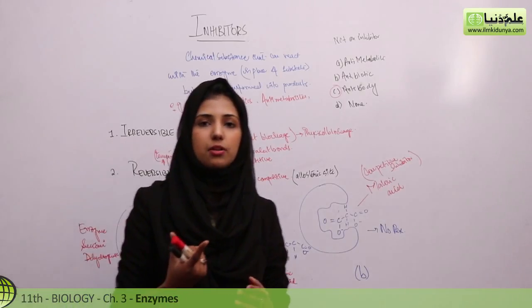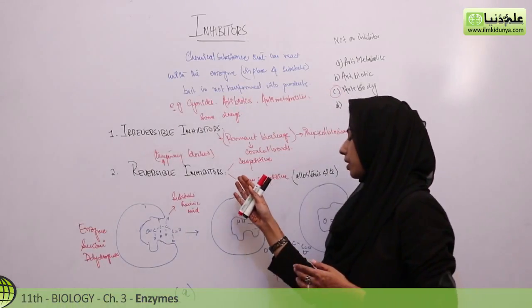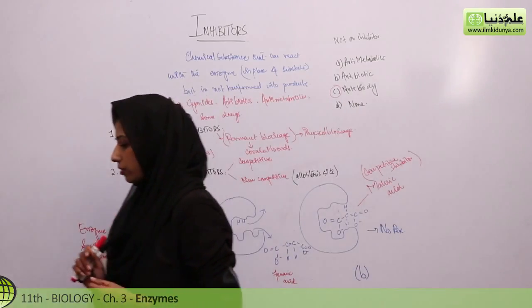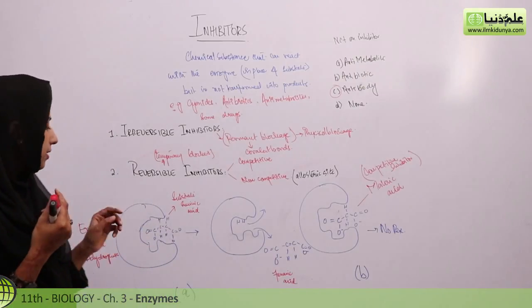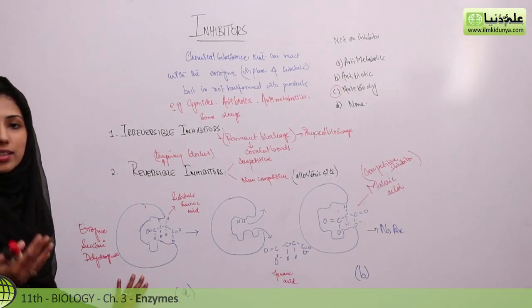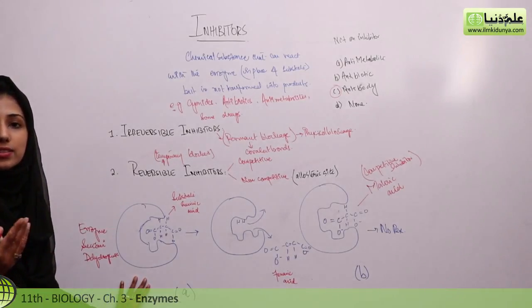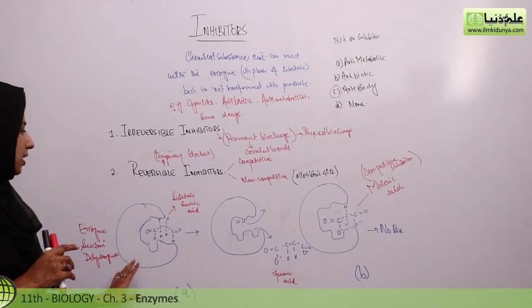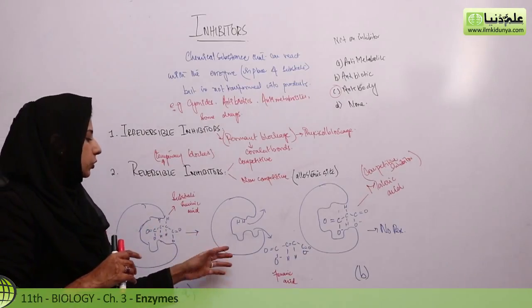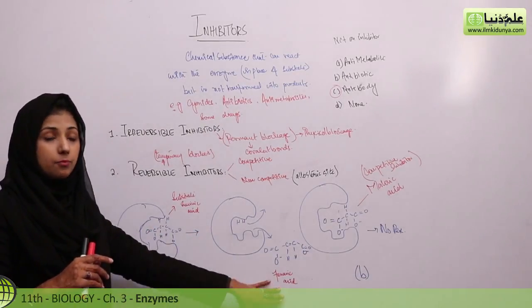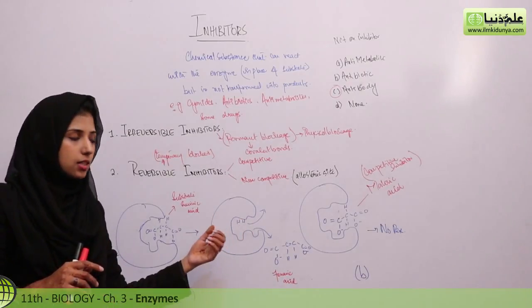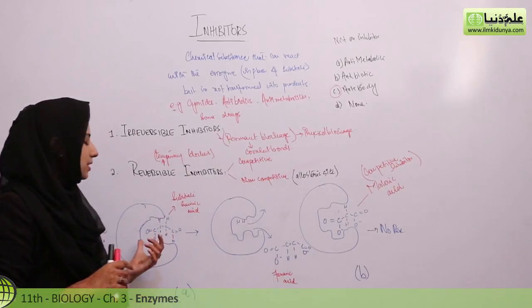In the book, an example of a competitive inhibitor is the enzyme succinic dehydrogenase. As the name indicates, succinic acid undergoes dehydrogenation. When the enzyme acts, succinic acid is transformed into fumaric acid as the product, releasing hydrogen.